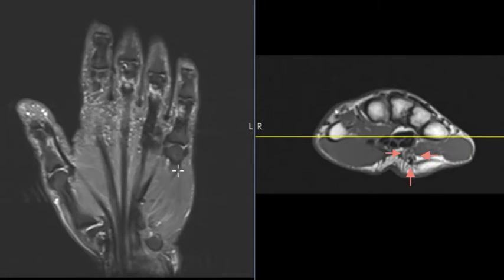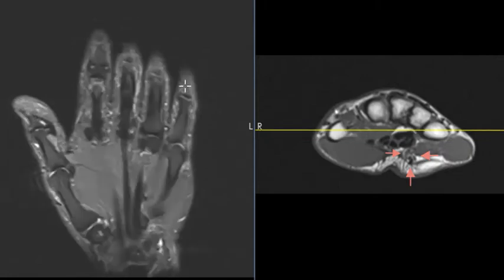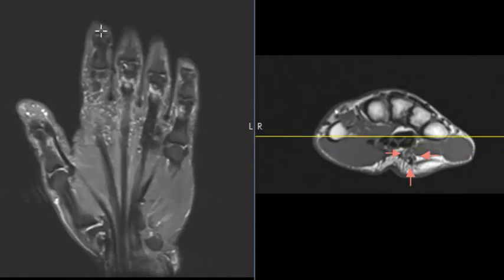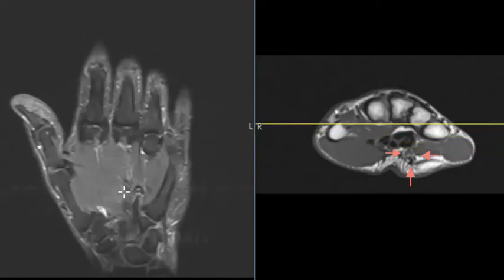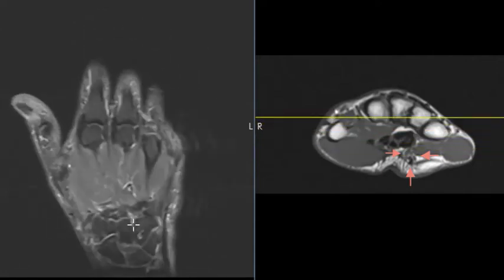This is a coronal view. This is the thumb to get oriented, this is the fifth digit, fourth digit, third, and here's the index finger. If we get down into the wrist area which is down here,